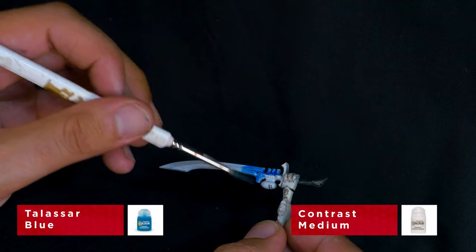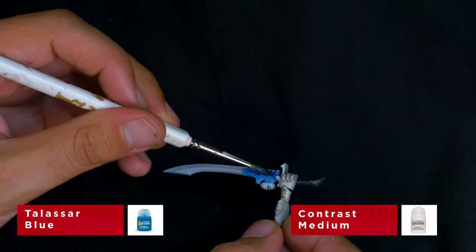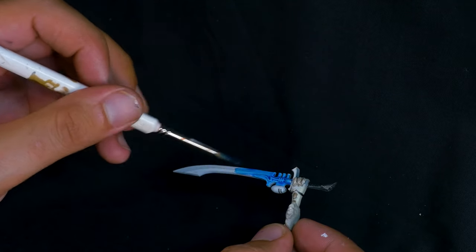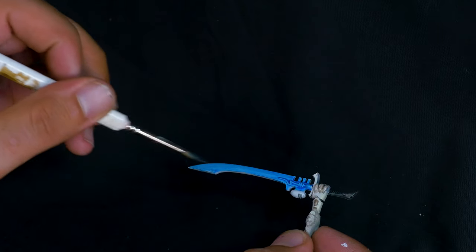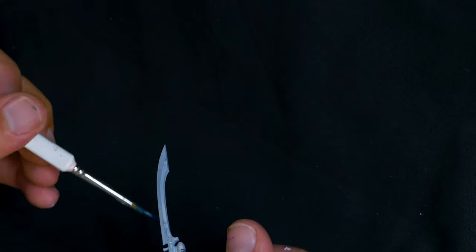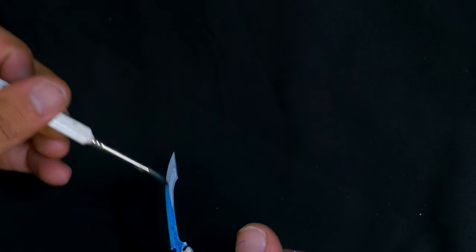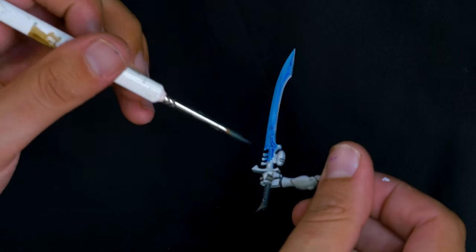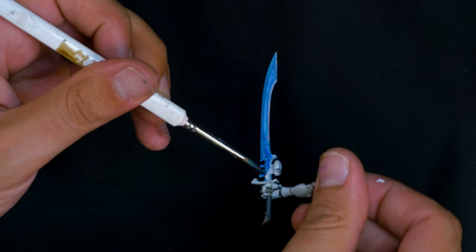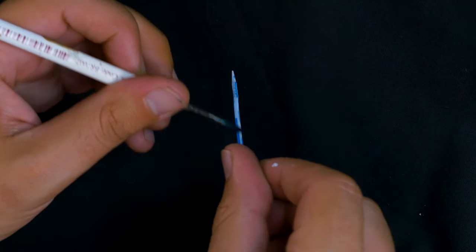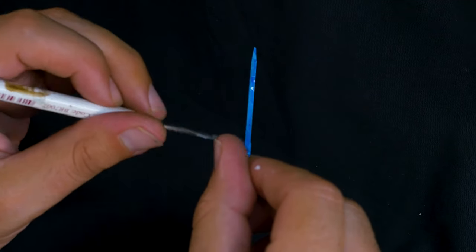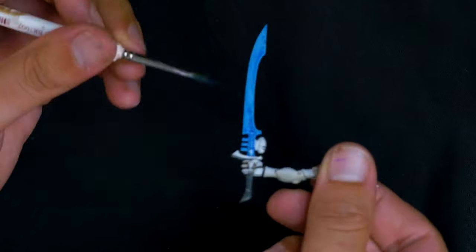I didn't really have much of a plan with this sword. Suffice to say, I wanted it blue and glowy, but I'm not sure what style of sword would have suited this aesthetic, so I decided to just play around with it a bit with a few colors. I started off with a light blue, which is Talassar Blue contrast mixed with some contrast medium just to start off with a light base color. I decided to go a little bit rough with it to try and come up with some organic shapes.